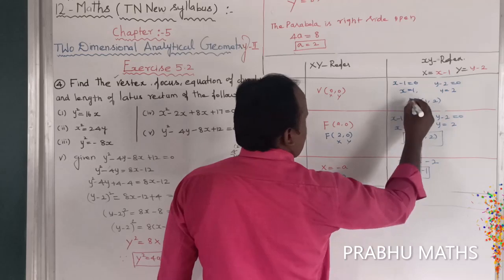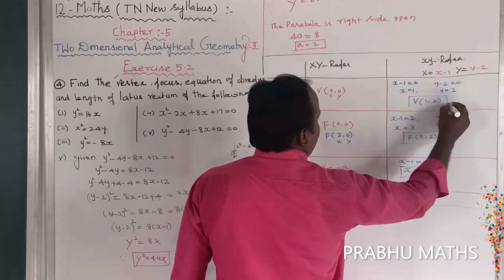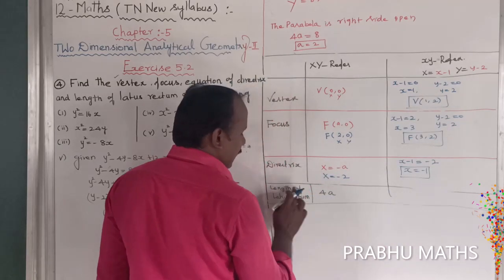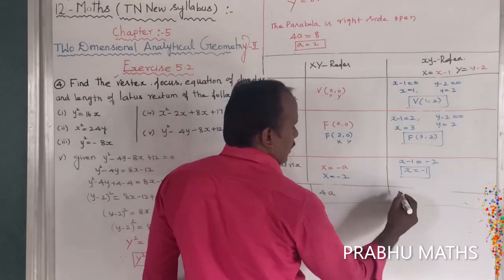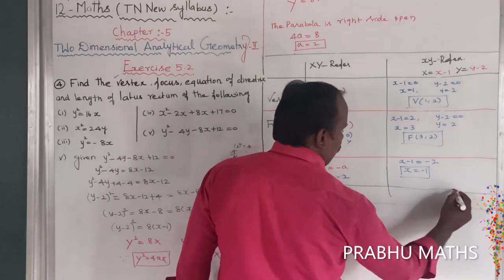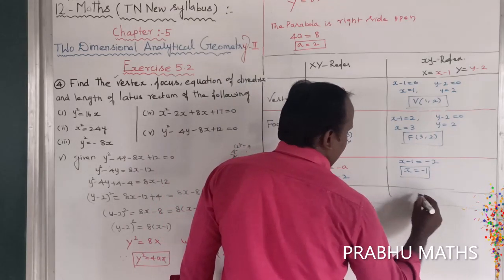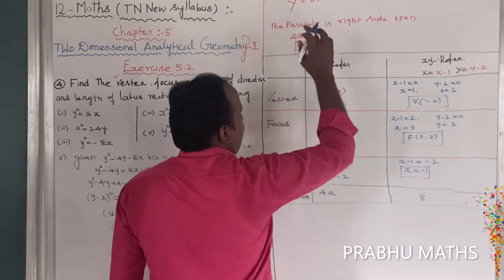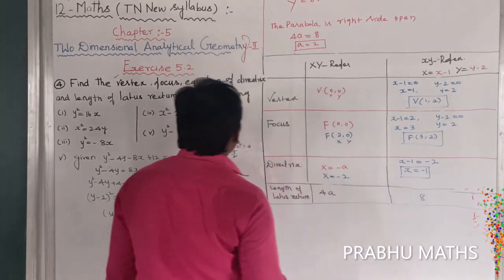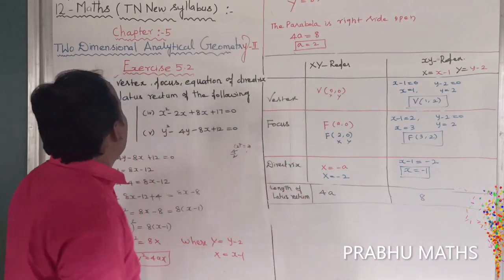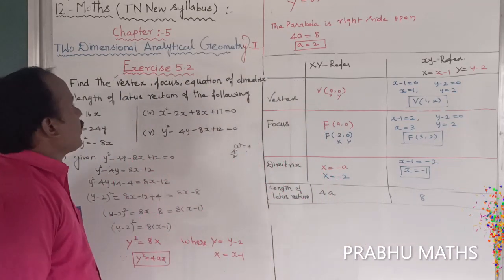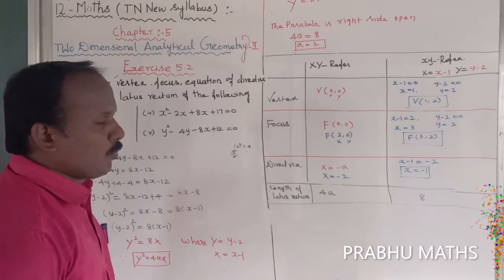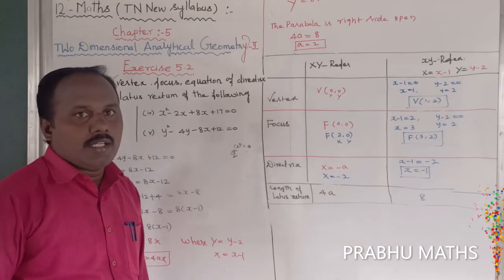The length of the latus rectum equals 4a, which equals 8. So the vertex is (1, 2), focus is (3, 2), directrix is x equals minus 1, and the length of the latus rectum is 8. All values are now complete.